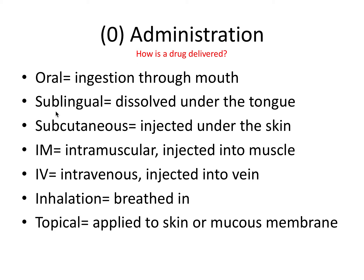Sublingual administration is when the drug is dissolved under the tongue. An example of this would be nitroglycerin for angina or heart attack. Subcutaneous or sub-Q is injected under the skin — an example being insulin injection for diabetics. IM is short for intramuscular, or injected into the muscle, such as an EpiPen inserted into the thigh tissue for a severe allergic reaction.